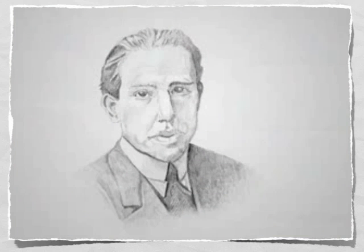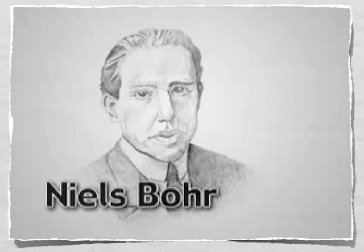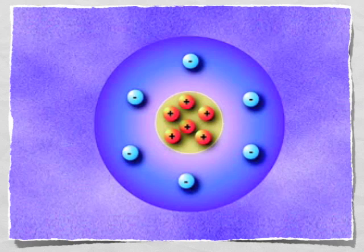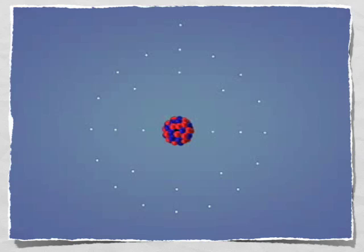In 1913, a Danish scientist by the name of Niels Bohr improved upon Rutherford's model of the atom. While Rutherford proposed that negatively charged electrons were held in orbit by the positively charged nucleus, he did not describe the location of the electrons. Niels Bohr proposed that electrons move in orbits around the nucleus.